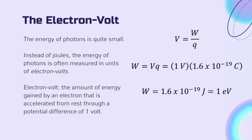As you can see, the energy of photons is quite small. So instead of joules, the energy of a photon is often measured in units of electron volts. An electron volt is defined as the amount of energy gained by an electron that is accelerated from rest through a potential difference of one volt. Using our potential difference formula from electricity and magnetism, the work done on an electron of charge 1.6 times 10 to the negative 19 coulombs passing through a potential difference of one volt is 1.6 times 10 to the negative 19 joules, which is the definition of one electron volt.